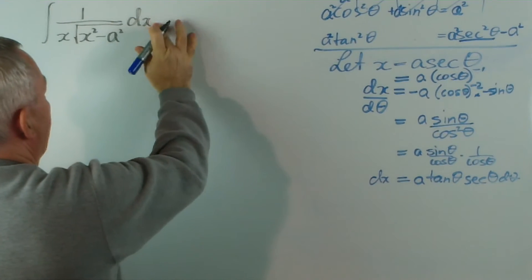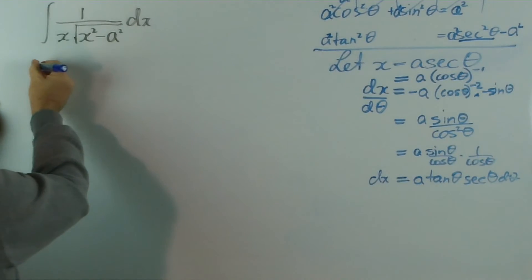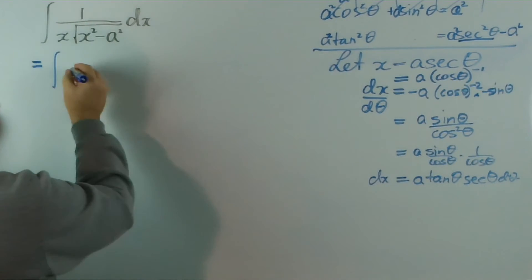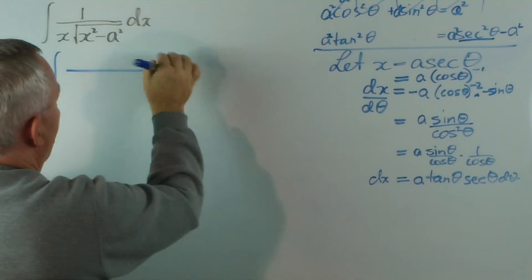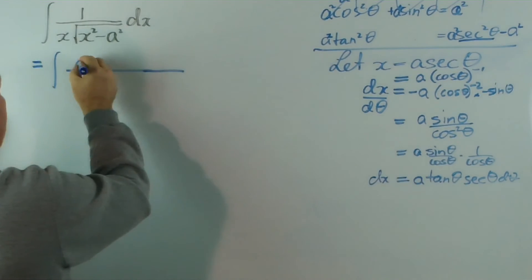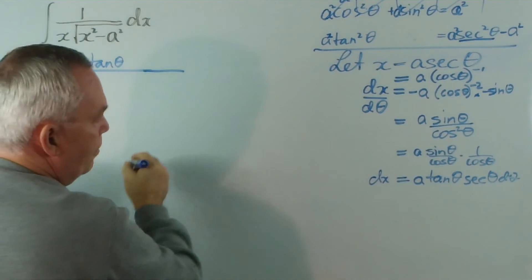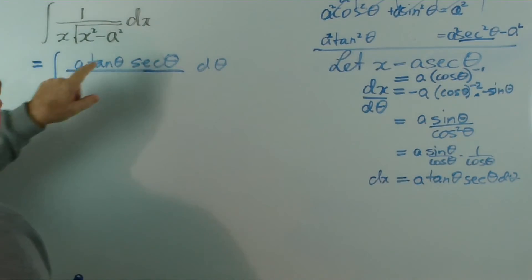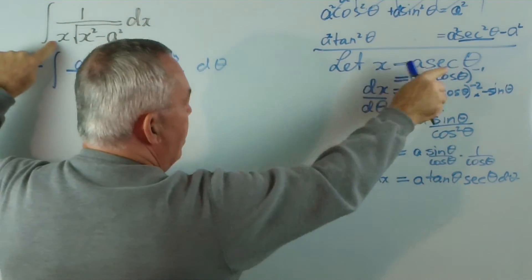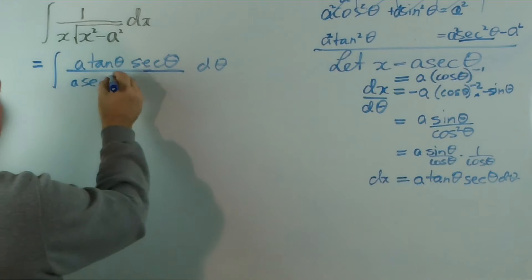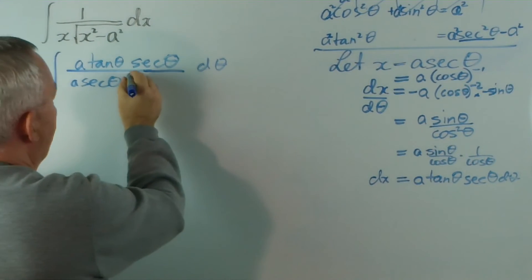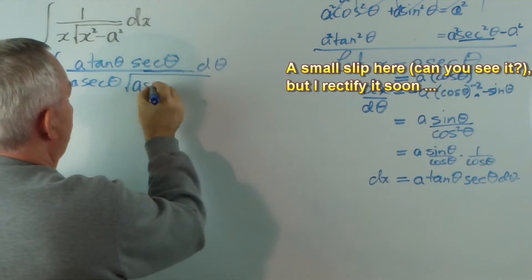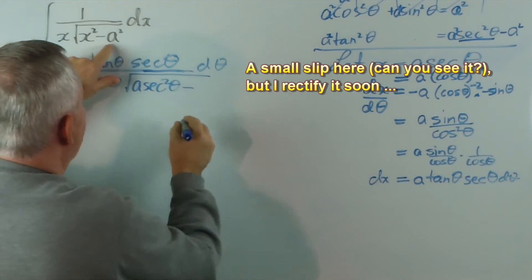So we must go through the choice first, and then find the derivative, and now we're in a position to make all of our substitutions. Actually, I realize I'm not going to have room there, so I'll tuck it in underneath, which is something I normally don't do, but let's work this integral out. The dx I'm going to replace with a tan theta sec theta d theta.